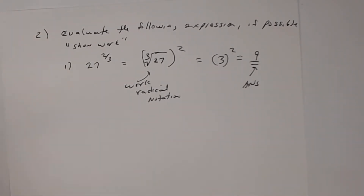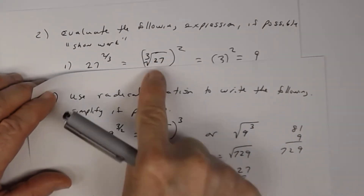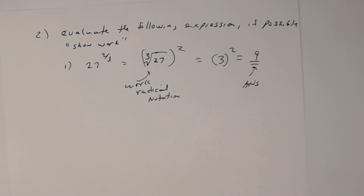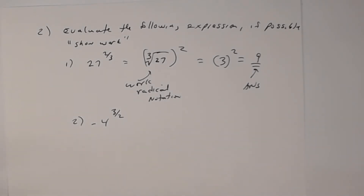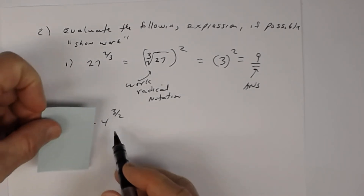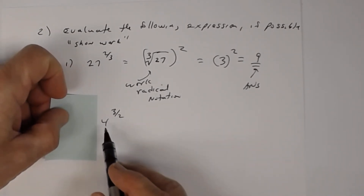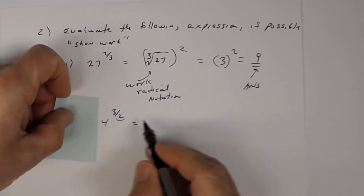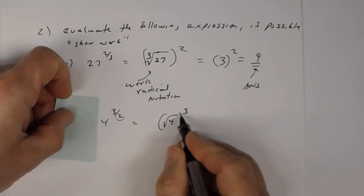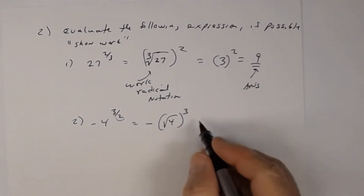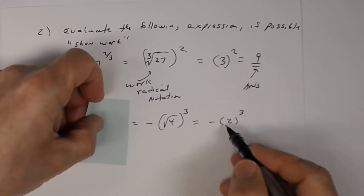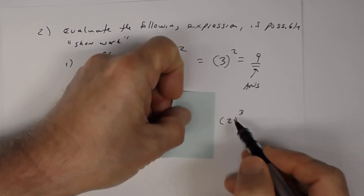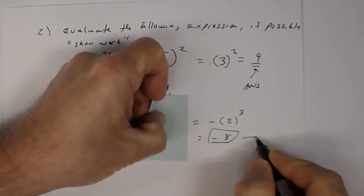Notice the difference between directions. When it says 'use radical notation,' it explicitly tells you to use a radical. When it just says 'evaluate,' you still need to convert to radical notation to show work. In both cases you use radical notation. So: cube root of 27 is 3, and 3 squared is 9 — that's your answer. Number 2: negative 4 to the 3/2. The negative is not inside parentheses, so only 4 is being raised to the 3/2. This becomes negative times the square root of 4, cubed. The square root of 4 is 2, and 2 cubed is 8, so the answer is negative 8.